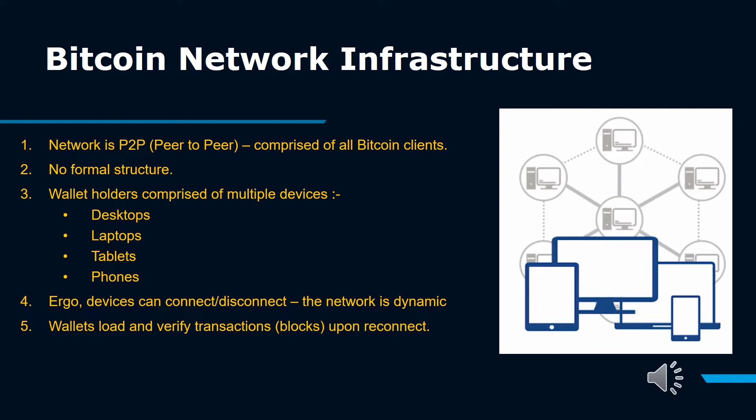The term Bitcoin network refers to the collection of nodes running the Bitcoin peer-to-peer protocol. In addition to the Bitcoin peer-to-peer protocol, there are other protocols such as Stratum, which are used for mining and lightweight or mobile wallets. These additional protocols are provided by gateway routing servers that access the Bitcoin network using the Bitcoin peer-to-peer protocol, and then extend that network to nodes running other protocols. For example, Stratum servers connect Stratum mining nodes via the Stratum protocol to the main Bitcoin network and bridge the Stratum protocol to the Bitcoin peer-to-peer protocol. We use the term extended Bitcoin network to refer to the overall network that includes the Bitcoin peer-to-peer protocol, pool mining protocols, the Stratum protocol, and any other related protocols connecting the components of the Bitcoin system.